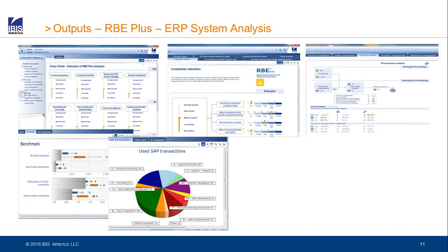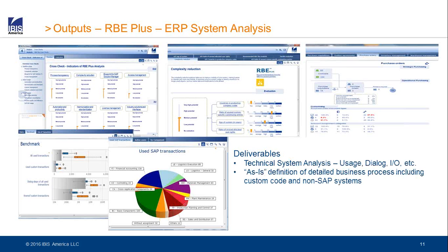Then we come up with a recommendation — something is a very high potential for that customer, a high potential, or medium or significant potential. We have all the underlying details for it. You see some of the deliverables here: some technical results, some process-related results, some strategic KPIs, and so forth.